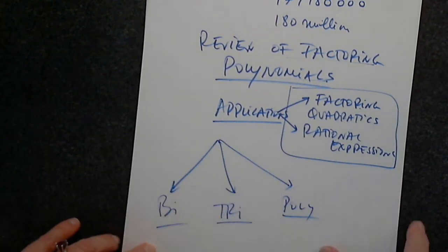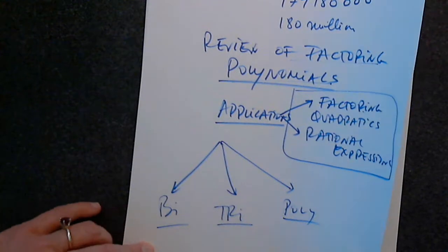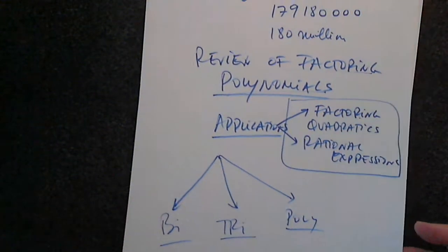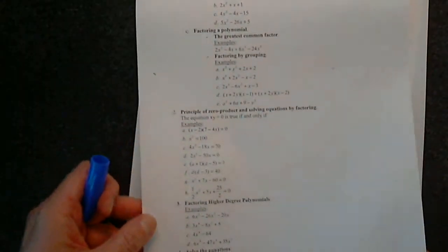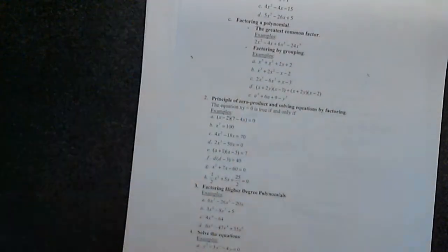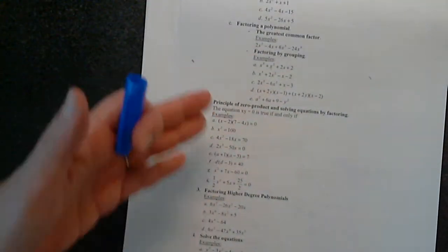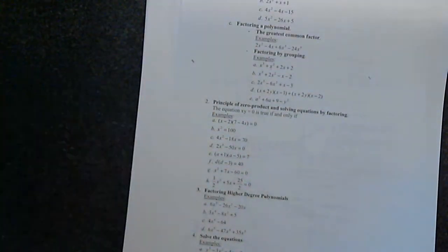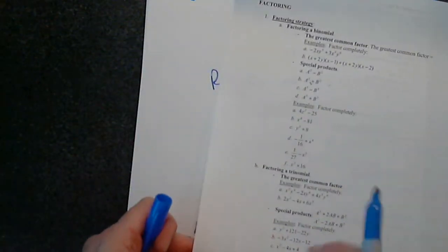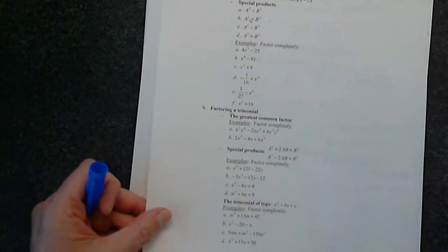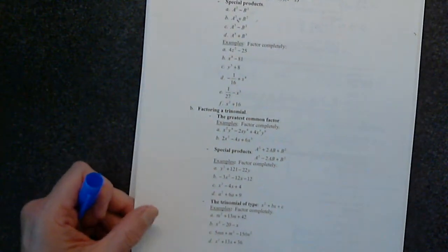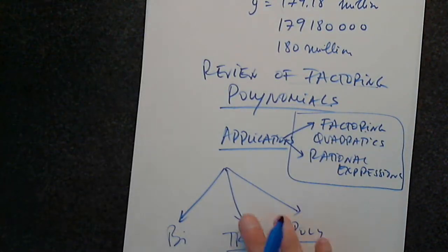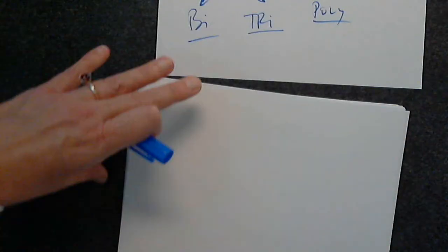I'm going to start reviewing binomials first, then trinomials, then polynomials, with examples from here. We're not going to finish all of this document — this is a couple of weeks of work. But we're going to cover everything, just not each and every example. You can work on them and ask questions throughout the rest of the semester.